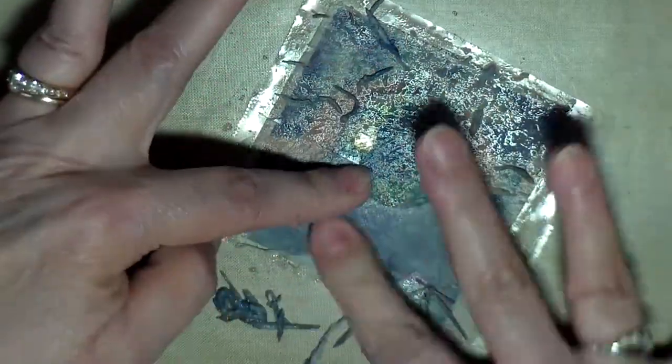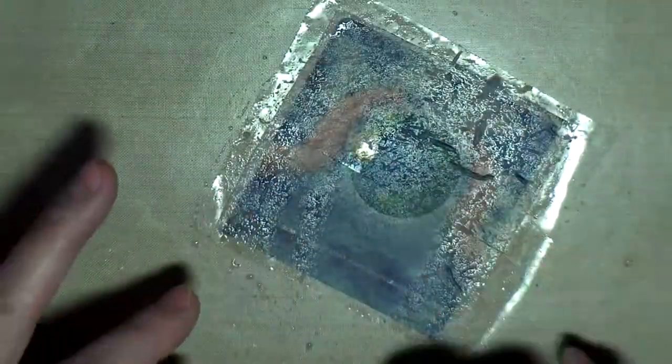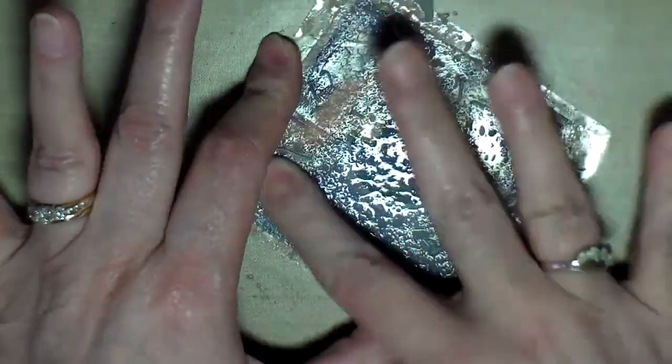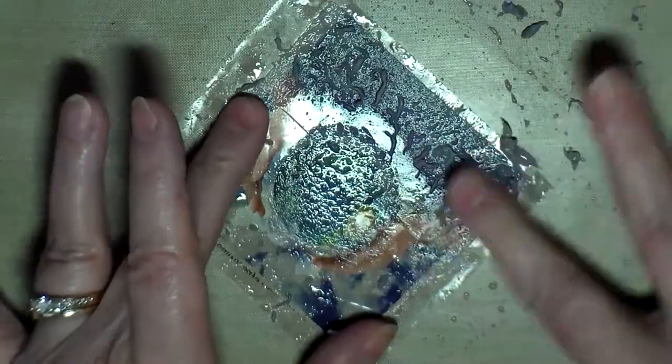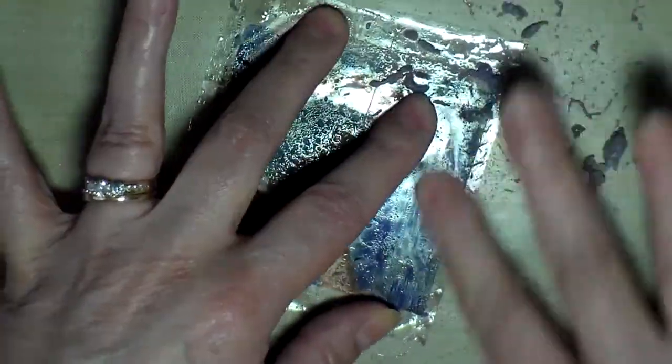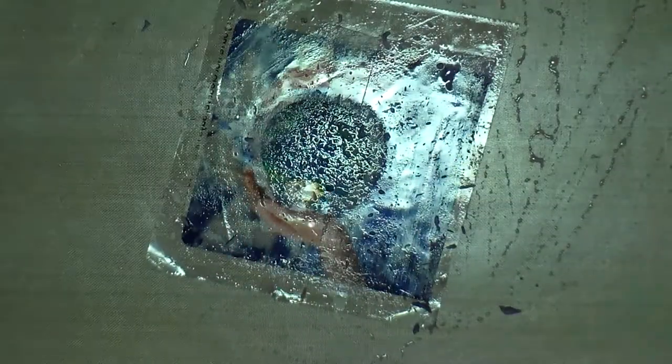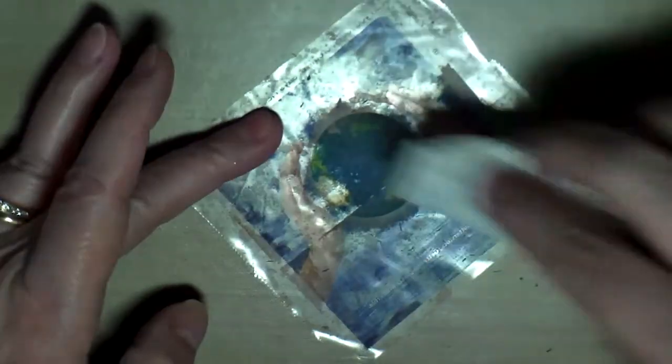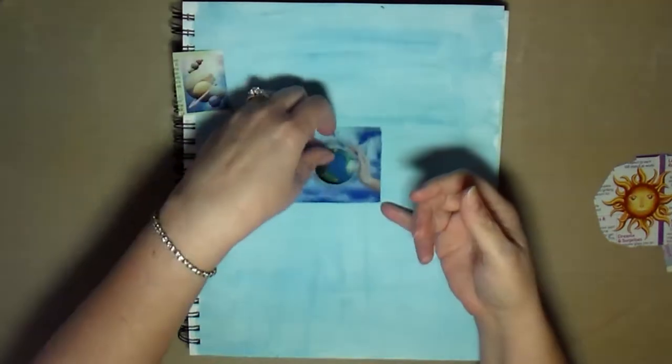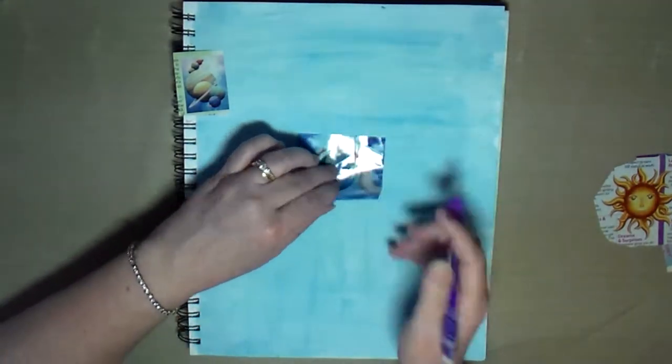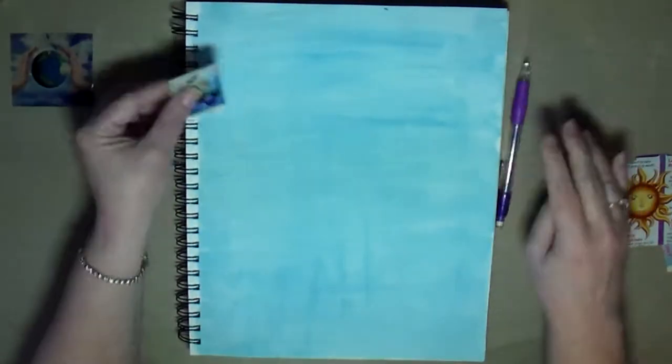I decided that instead of removing the paper pulp off of the whole back side of it, I would leave it on around the earth, so that way when I put it on my page, it's not so transparent. So I'm just removing the paper pulp from around the rest of the image, and then leaving it on the back of the earth there. So then I trim that up, and this is going to be my focal image on the page, and so I put it on my page to where I would want it to be, and then I mark it with a pencil.